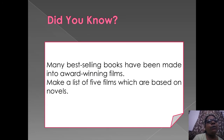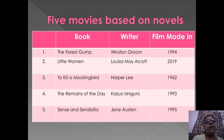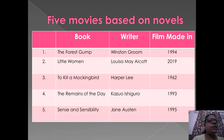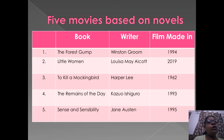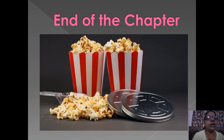Did you know? Many best-selling books have been made into award-winning films. Make a list of five films which are based on novels. Here are five movies along with their writers, and the films were made in 1934, 2019, 1962, 1993, and 1995.